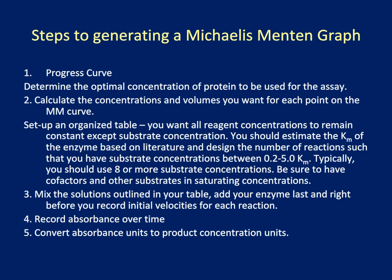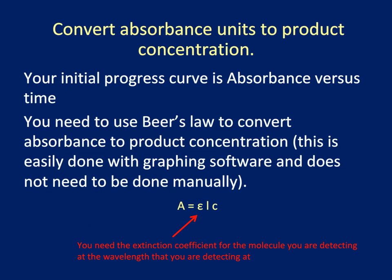Once you have recorded your progress curve, you want to convert your absorbance units to product concentration. Your initial progress curve is absorbance versus time. You need to use Beer's Law to convert absorbance to product concentration. This is easily done with graphing software and does not need to be done manually. Beer's Law states that absorbance equals the extinction coefficient times the path length L times the concentration of the solution. So to measure the concentration, you would divide the absorbance by the extinction coefficient and the path length of the spectrophotometer. Be sure to know the path length of your spectrophotometer as well as the extinction coefficient of the molecule you are detecting at the wavelength that you are detecting it at.